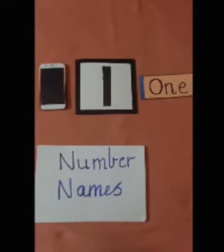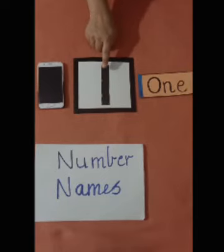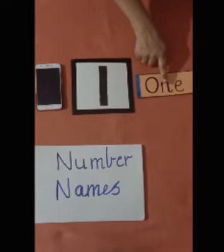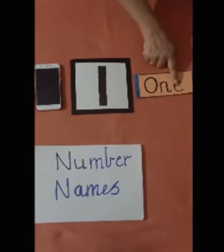Children you are going to repeat after me. What is this? This is number 1 and the name of number 1 is O, N, E, 1.